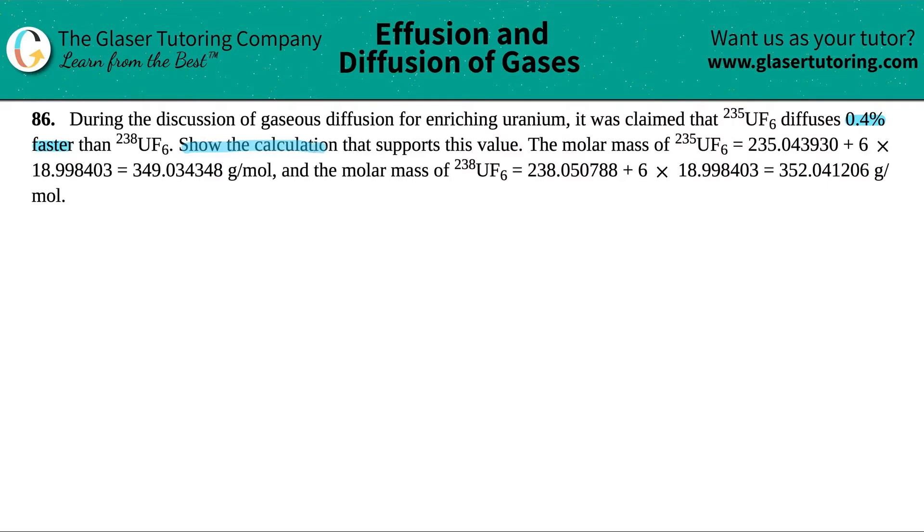Show the calculation that supports this value. They tell us that the molar mass of 235UF6 was basically this number, 349.034348 grams per mole, and the molar mass of 238UF6, they just did the calculation right here. Basically the molar mass is 352.041206 grams per mole.